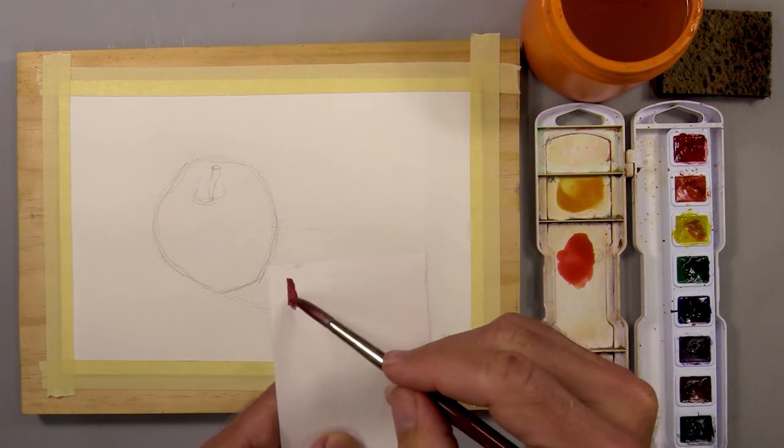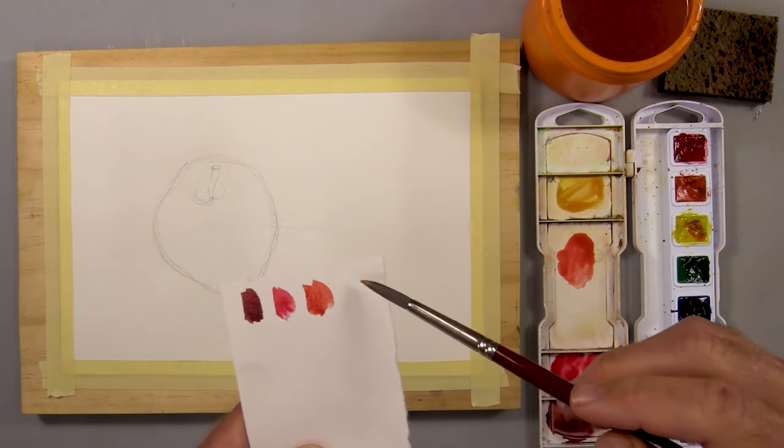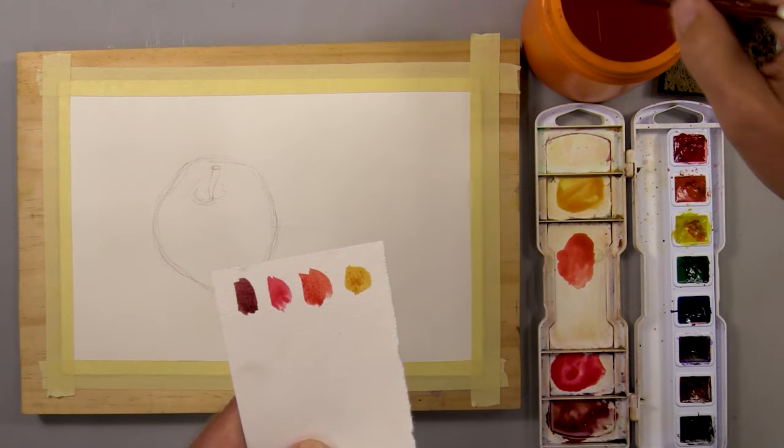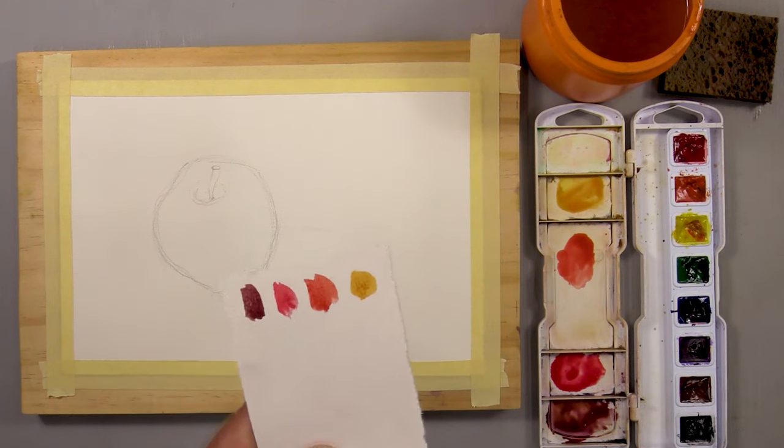Now I get a piece of test paper to see how these colors are going to look before I start painting. I've got a nice change in value from light to dark and warm to cool. Now let's paint.